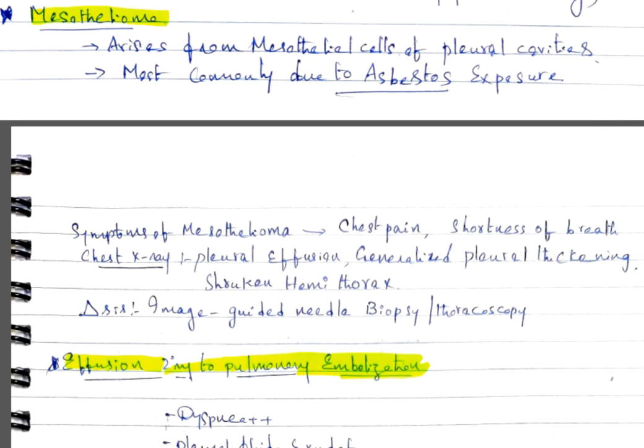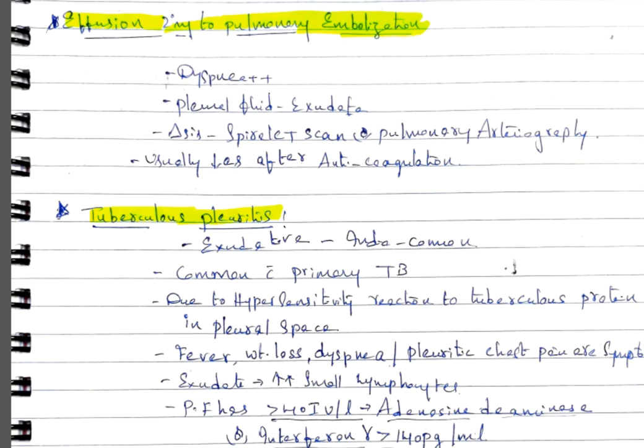Effusion secondary to pulmonary embolization: patient presents with dyspnea, pleural fluid is exudative type. Diagnosis by spiral CT scan or pulmonary arteriography. It usually decreases after anticoagulation; no specific treatment for pleural effusion is needed.